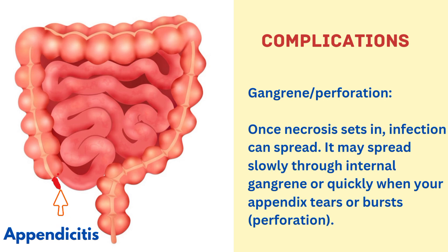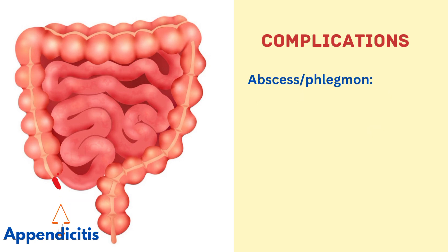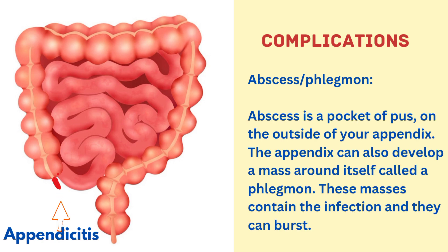Once necrosis sets in, infection can spread — either slowly through internal gangrene or quickly when your appendix tears or bursts, called perforation. Another complication is abscess and phlegmone. An abscess is a pocket of pus on the outside of your appendix, and the appendix can also develop a mass around itself called a phlegmone.